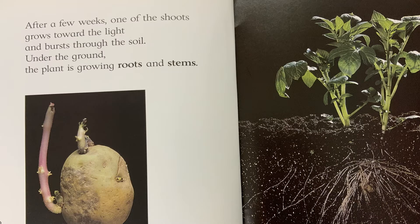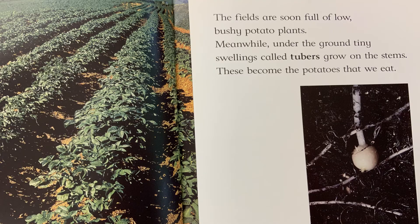After a few weeks, one of the shoots grows toward the light and bursts through the soil. Under the ground, the plant is growing roots and stems — where we can't see, something is taking place. The fields are soon full of low, bushy potato plants. Meanwhile, under the ground, tiny swellings called tubers grow on the stems. These become the potatoes that we eat. Potato is like a root — it's a vegetable that's a root.